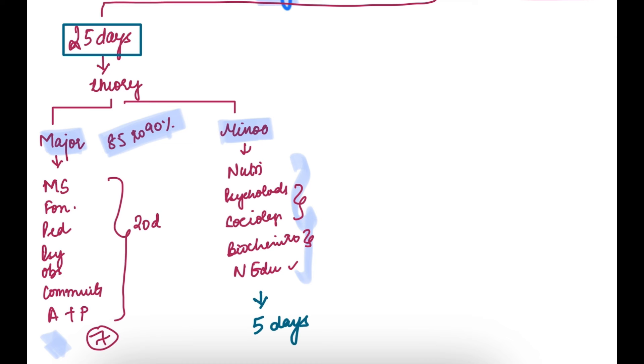These minor subjects, you need to give only five days out of twenty-five days. One day for nutrition, one day for nursing education, one day for sociology and psychology together because you've already studied them well in BSC, and one day for biochemistry and biophysics. Nursing management - these five days you need to finish these subjects somehow.